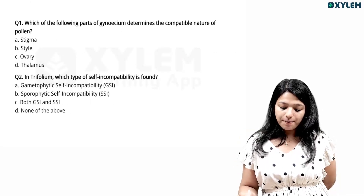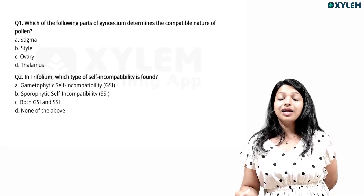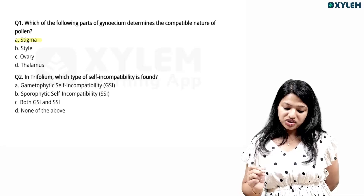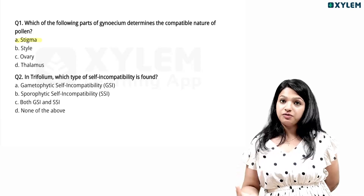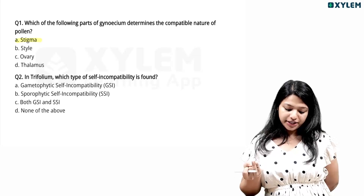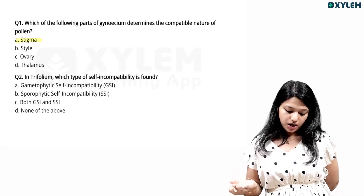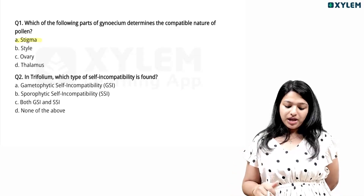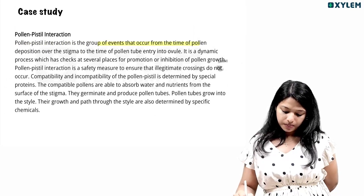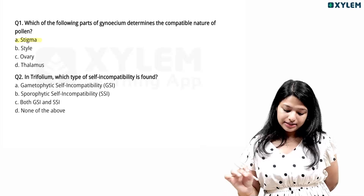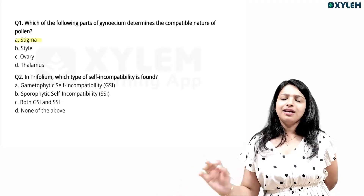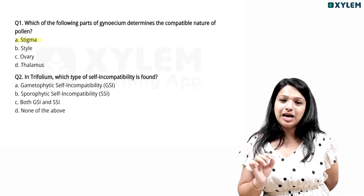Which of the following parts of the gynoecium determines the compatible nature of pollen? In Trifolium, which type of self-incompatibility is found — gametophytic self-incompatibility or sporophytic self-incompatibility, both GSI and SSI, or none of the above? Trifolium has self-incompatibility. Put the answer in the comment box.